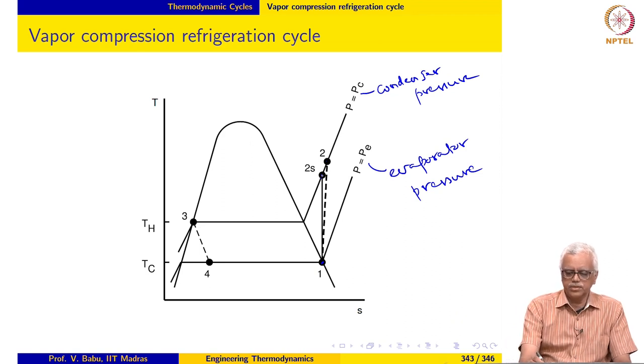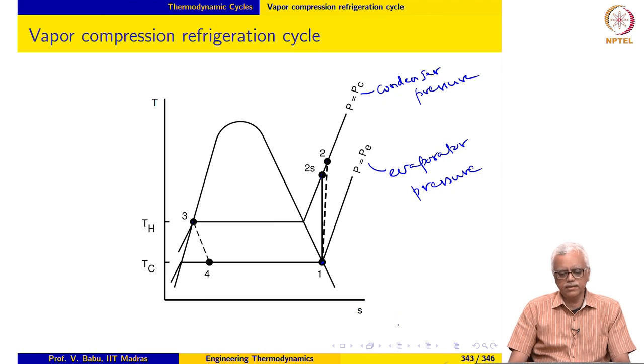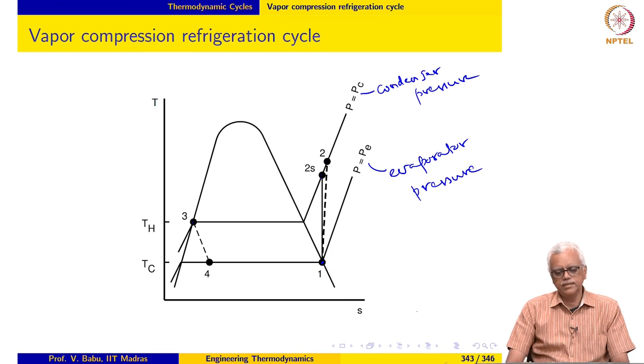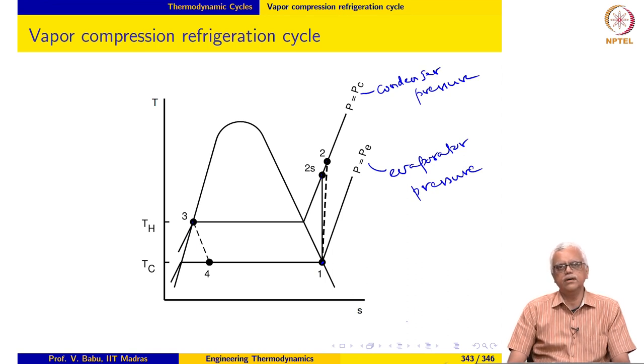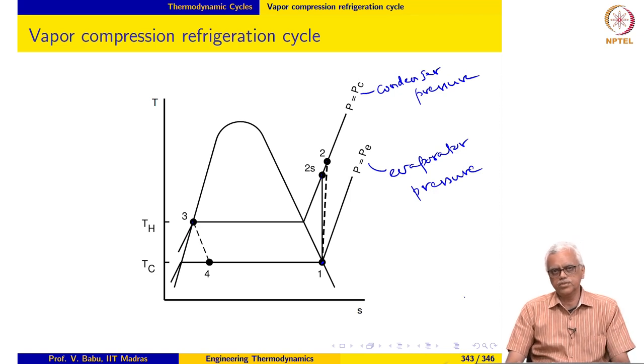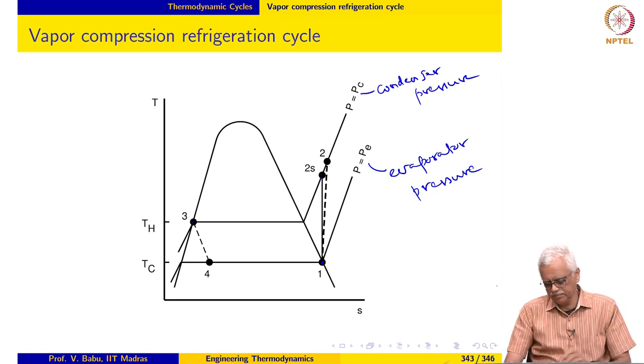The high pressure, high temperature refrigerant is then cooled at constant pressure in the condenser until it becomes a saturated liquid. And this temperature is taken to be the highest temperature. I am sorry, this is taken to be TH for purposes of calculating entropy generation.